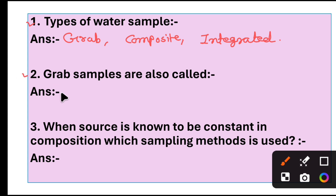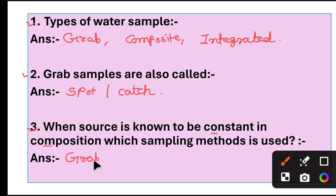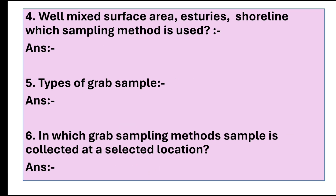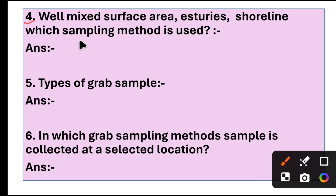Question 2: Grab samples are also called spot or catch samples. Question 3: When source is known to be constant in composition, which sampling method is used? Answer: Grab sampling method. Question 4: Well-mixed surface water as it reaches shoreline — which sampling method is used? Answer: Grab sampling.